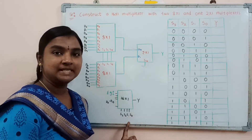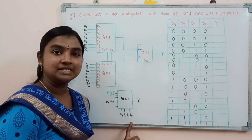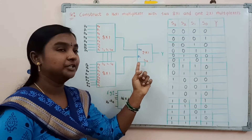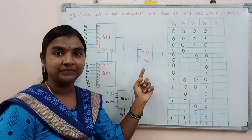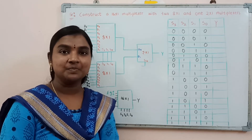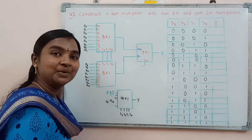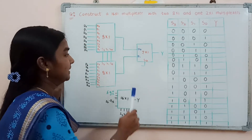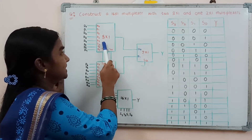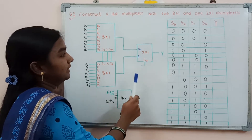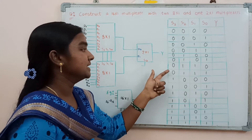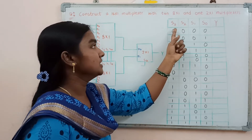This same 16-to-1 multiplexer can be constructed using smaller multiplexers — two 8-to-1 multiplexers and one 2-to-1 multiplexer. In this manner, we may construct any large multiplexer by using smaller multiplexers. Now, considering the truth table for the 16-to-1 multiplexer, which consists of 4 selection lines: S3, S2, S1, and S0.